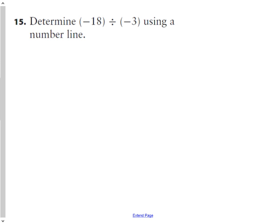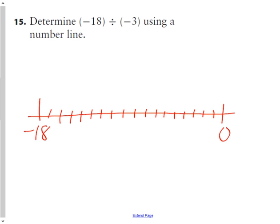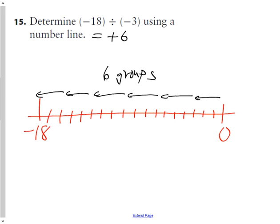Question 15 says determine the quotient using a number line. If I was to say, I'm going to divide negative 18 into groups of negative 3. If I'm going to divide negative 18 into groups of negative 3, that's one group of negative 3, two groups of negative 3, three groups of negative 3, four groups of negative 3, five groups of negative 3, six groups of negative 3. If I said, what is negative 18 divided by negative 3, there are six groups of negative 3 in negative 18. So therefore, negative 18 divided by negative 3 is positive 6. If you didn't do that one, no big deal, but that's the thinking you should have done for that one. I'm not going to test you on that one.